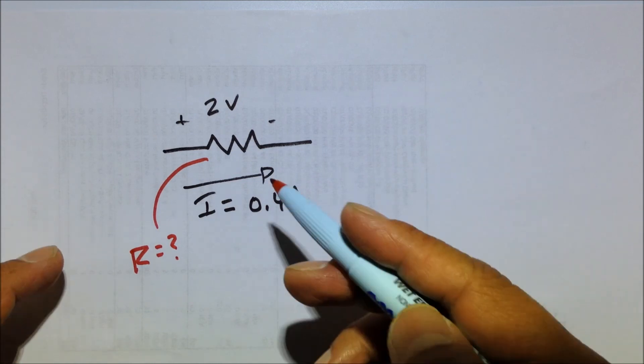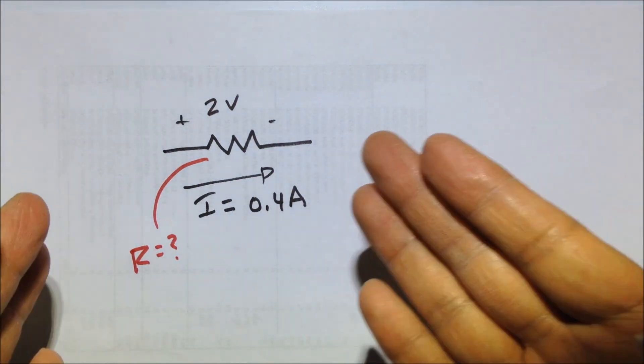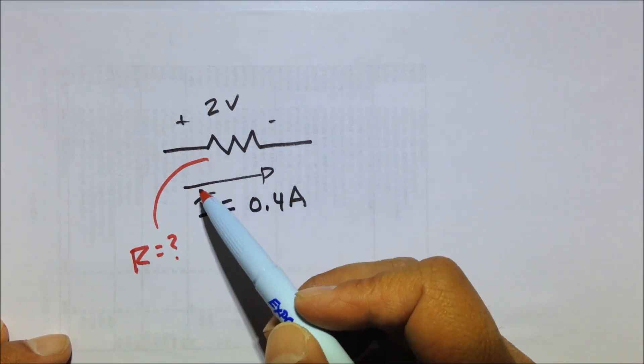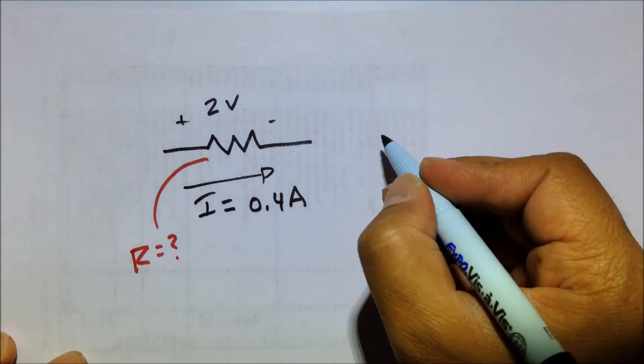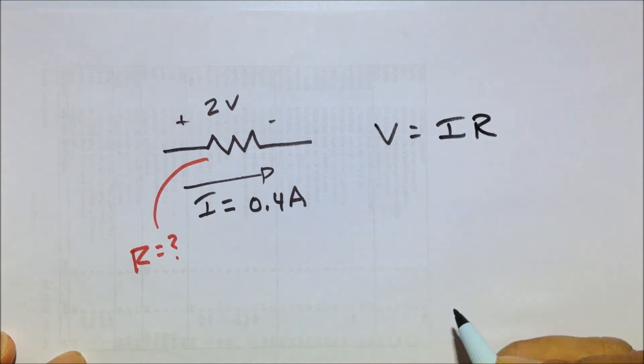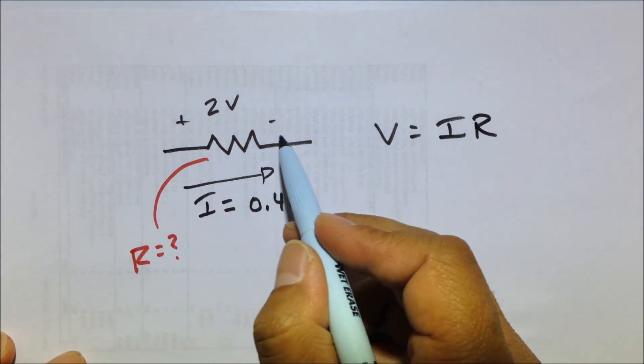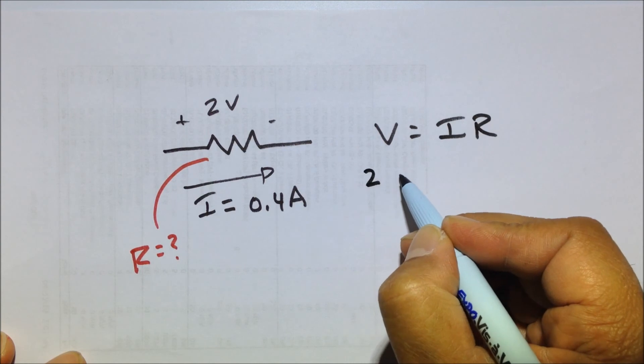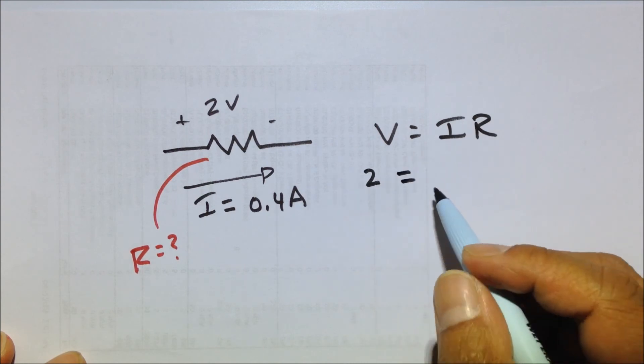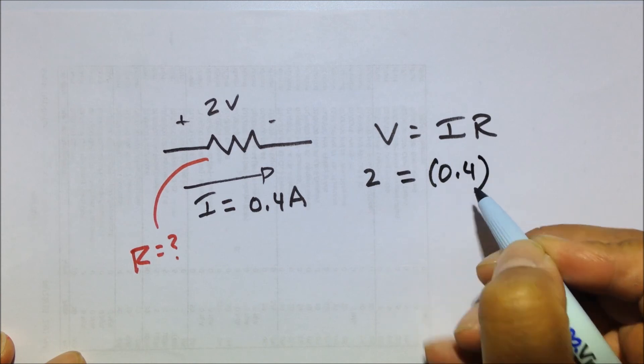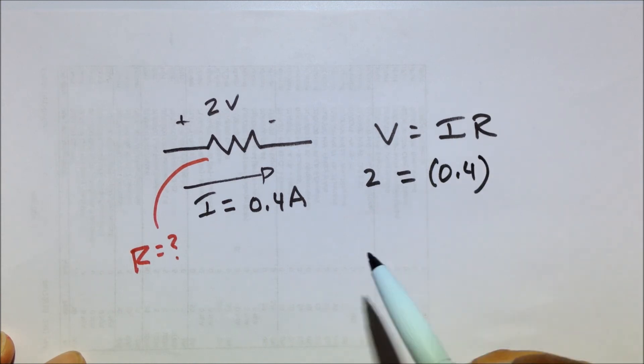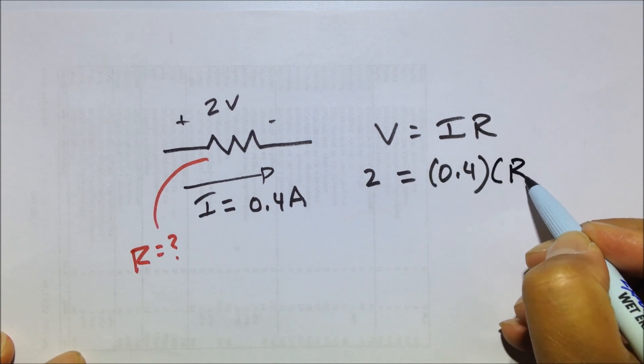Okay, and again, this is based off a circuit, so let's imagine that this is embedded within the circuit. Well, how do we solve for R? Just use the Ohm's Law equation, V equals I times R. Since we know that the voltage drop across the resistor is 2 volts, we can say 2 equals the current, which is 0.4. Notice I didn't say milliamps, it's 0.4 amps, times the resistance.